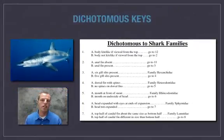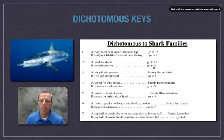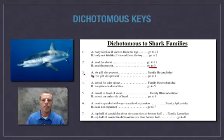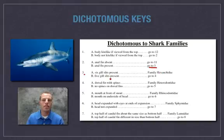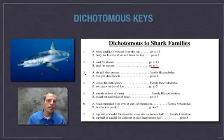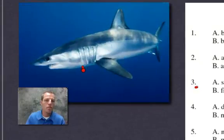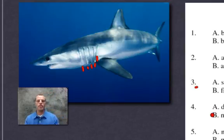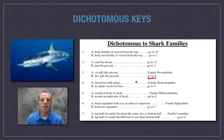At number three, we're looking at whether there are six gill slits or five gill slits. Zooming in on the shark, we count: one, two, three, four, and five. There are five gill slits, which meets the criteria to go to number four.